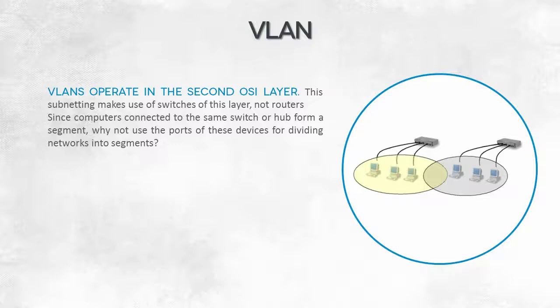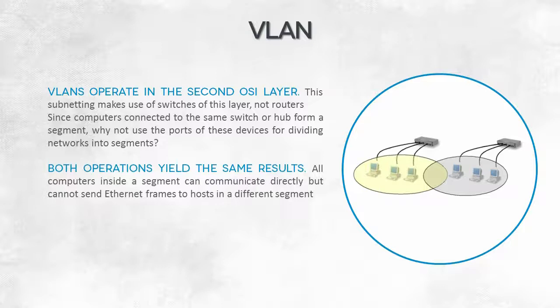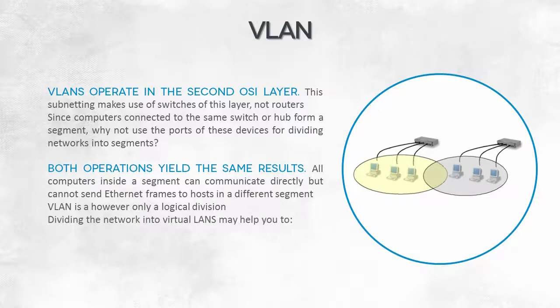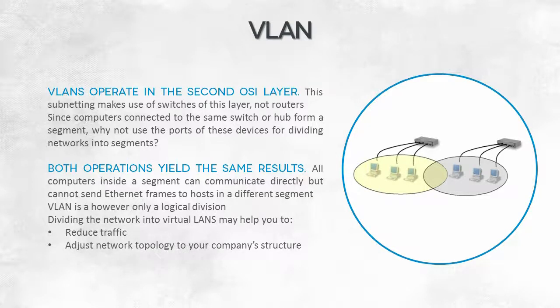Computers connected to the same switch can exchange data with one another. Instead of using separate switches, you can also divide a network into subnets using specific ports — for example, ports 1 to 6 will constitute subnet A and the rest will constitute subnet B. The final effect will be the same, and direct communication between individual sections of the network is now possible.